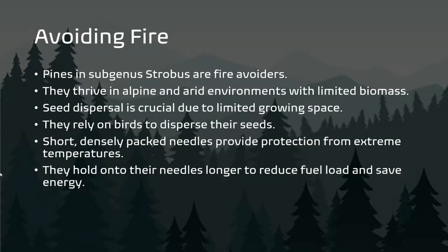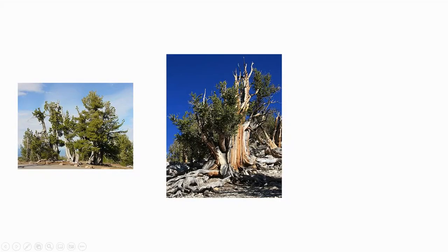Fire-avoiding pines of the subgenus Strobus are adapted to survive in alpine and arid environments with limited space for growth. They rely on birds to disperse their seeds and have short, densely packed needles to protect them from extreme temperatures. These trees hold onto their needles longer, reducing fuel load and saving energy. This picture is of Pinus albicaulis, and this one is of Pinus longaeva — you can tell these trees are really sparse and avoid the other trees so that they don't get burned down.